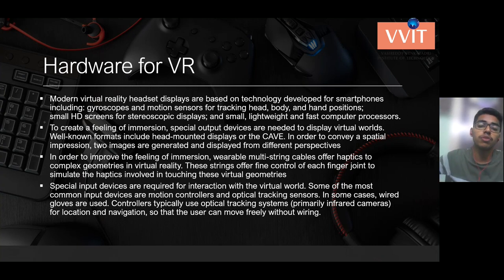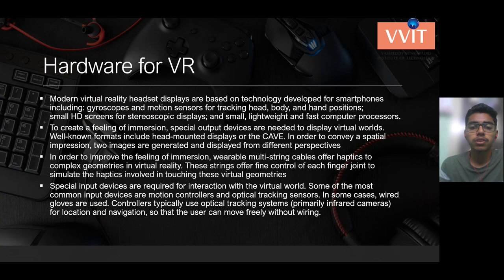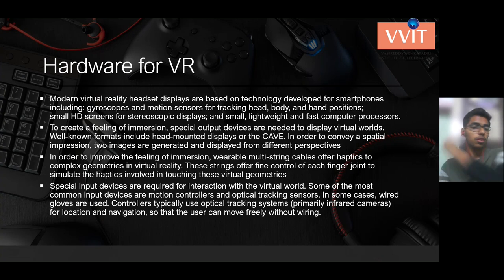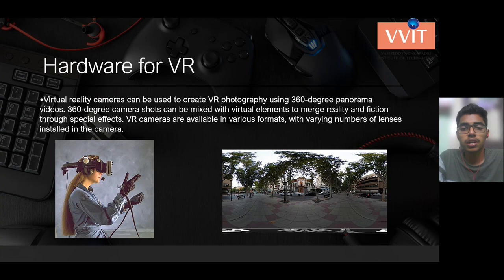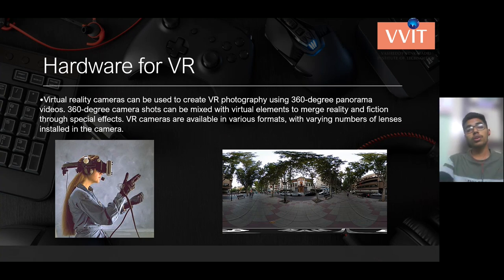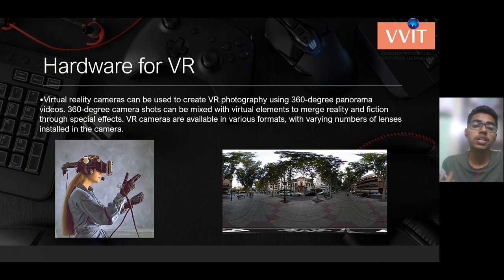The user wearing these VR gadgets can really feel the virtual world. Special input devices are required for interaction with the virtual world. The most common input devices are motion controllers and optical tracking sensors; in some cases, wired gloves are used. Controllers typically use optical tracking systems for location and navigation so that the user can move freely without wiring. Virtual reality cameras can be used to create VR photography using 360-degree panorama videos. 360-degree camera shots can be mixed with virtual environments to merge reality and fiction through special effects.